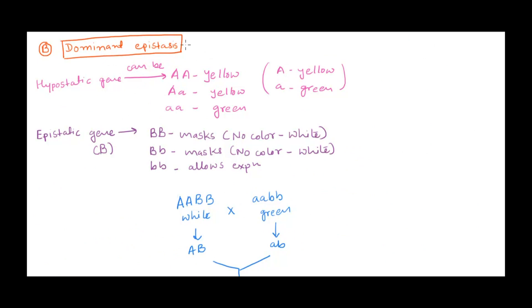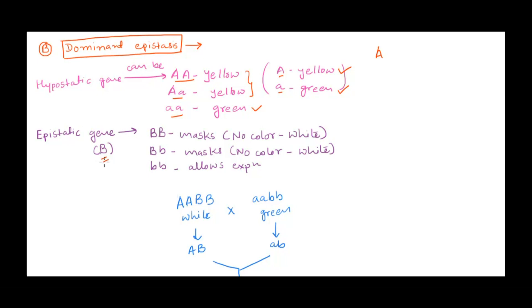To understand dominant epistasis, we'll talk about pigmentation in squash fruit. The fruit color is controlled by gene A. The dominant allele codes for yellow color and homozygous recessive codes for green color. Possible combinations are homozygous or heterozygous dominant giving yellow, or homozygous recessive giving green pigmentation. Since we are talking about epistasis, there is also an epistatic gene — gene B.